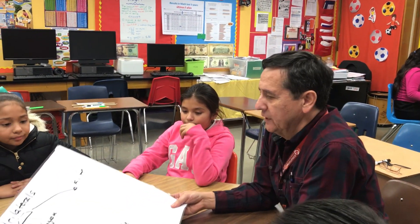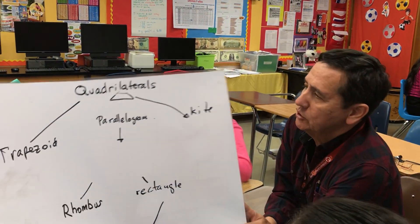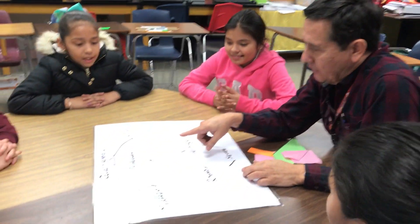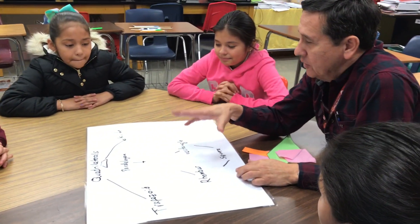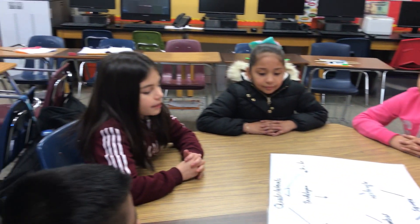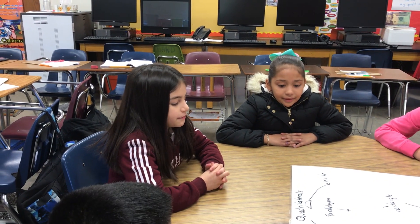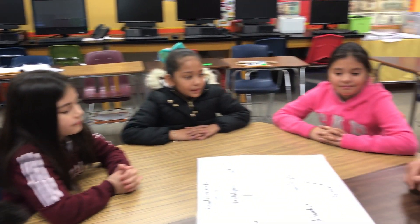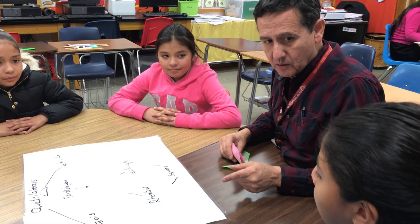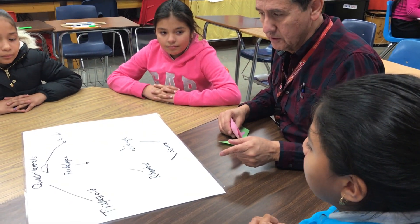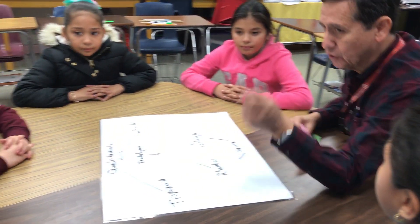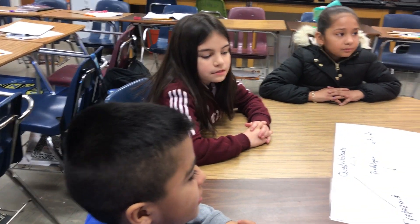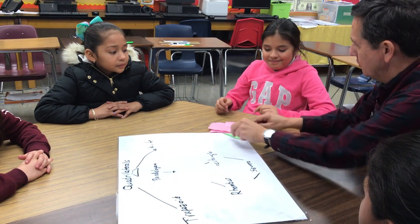We're in a fourth grade class and we're going to talk about geometry — we're going to classify quadrilaterals. What is the meaning of quadrilaterals? Four sides. Quadri means four and lateral means sides, so four sides.